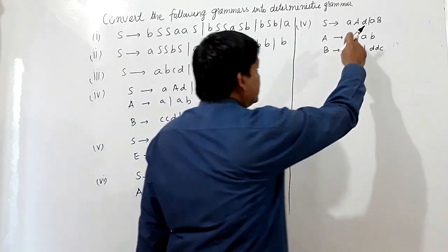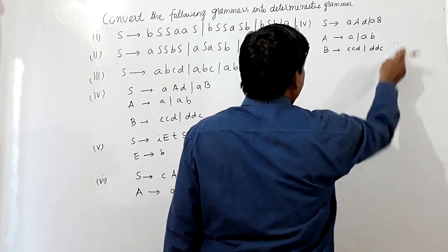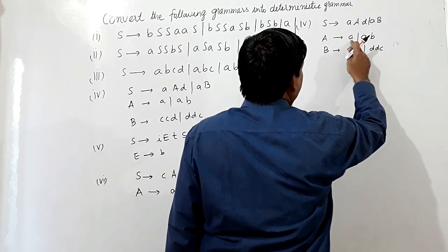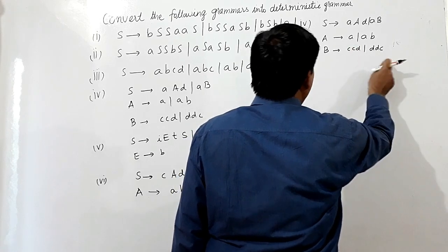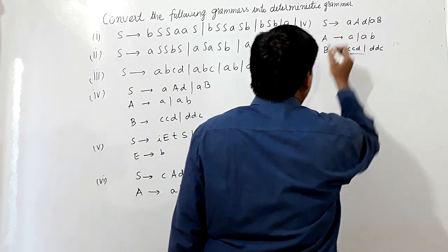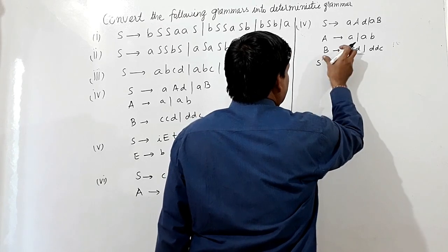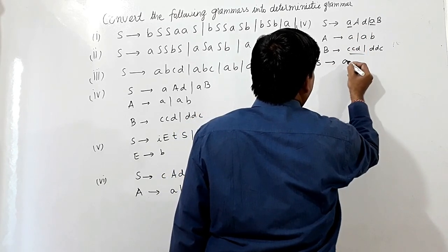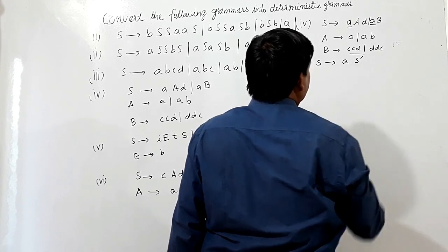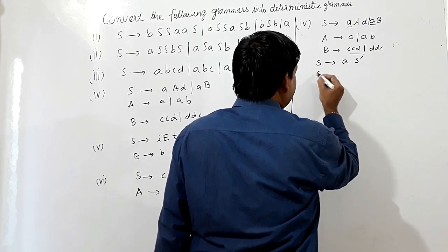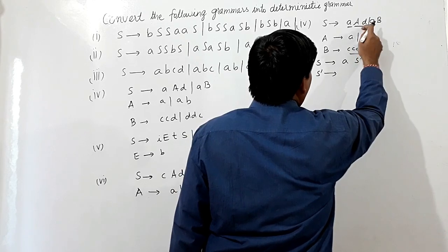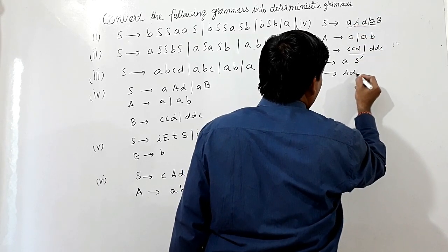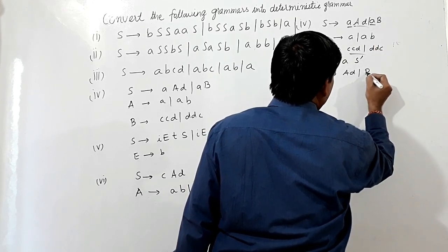Now we shall convert the fourth grammar into deterministic grammar. We can see A is common here, and nothing is common elsewhere. So S2 is producing A S3 — this A is common. For S3, the remaining part is AD, so I am writing AD, and here B, I am writing B.